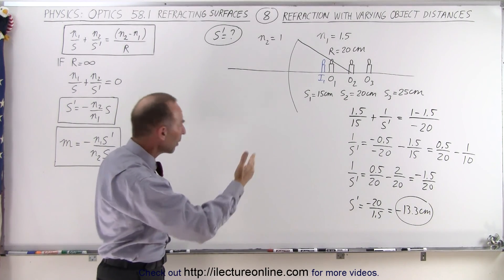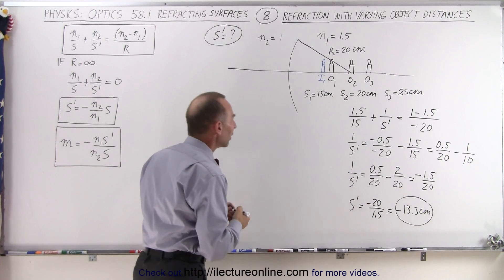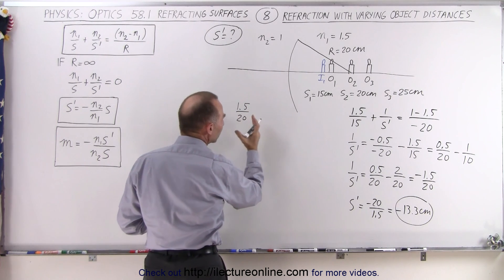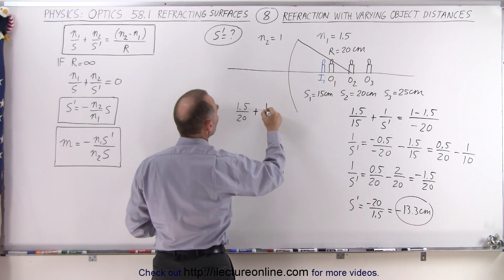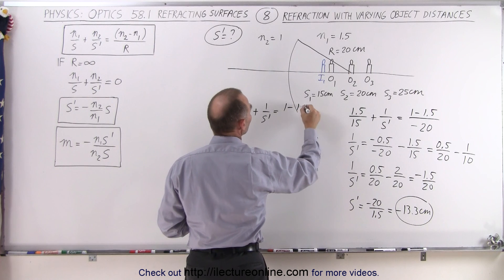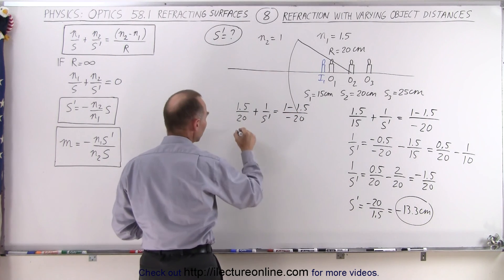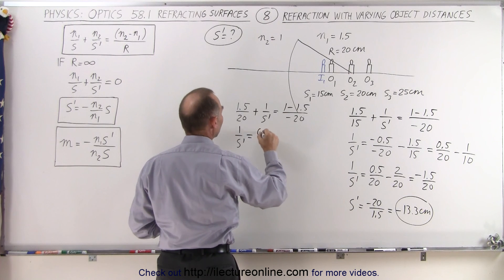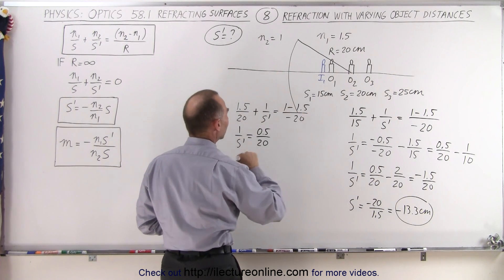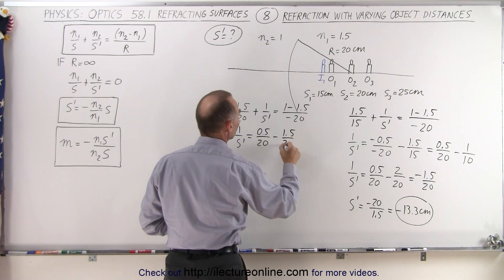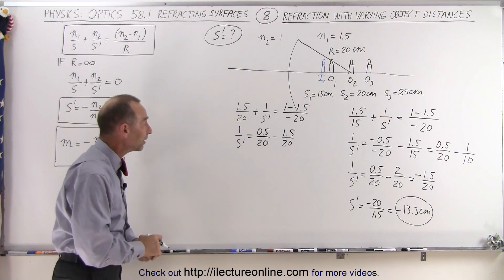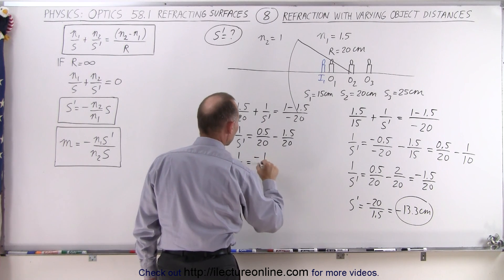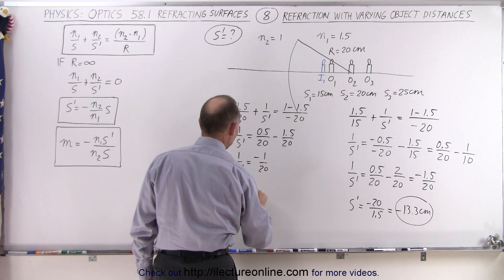What happens when we put the object a little farther away at the center of curvature? We use the equation again: 1.5 divided by 20 plus 1 over S prime equals 1 minus 1.5 divided by negative 20. So 1 over S prime equals — notice we get the same term on the right side — 0.5 divided by 20, because the negatives cancel. And this becomes minus 1.5 divided by 20. They share the same denominator, so minus 1.5 plus 1.5 gives 1 over S prime equals minus 1 over 20, meaning S prime equals negative 20.